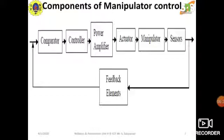The sensors monitor the movement of the manipulator, and the current position, velocity, and acceleration of the manipulator are fed back and compared with the desired position, velocity, and acceleration of the end effector. If there is any error between the desired and the actual, the controller produces the necessary set points. These are amplified by a power amplifier, and the amplified signals are fed to the actuators, which provide the necessary commands to the manipulator to meet the desired task.